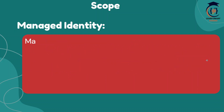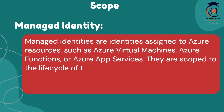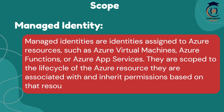Coming back to Managed Identity in terms of scope: Managed Identities are identities assigned to Azure resources such as virtual machines, function apps, or app services. They are scoped to the lifecycle of the Azure resource they are associated with, and they inherit permissions based on the resource configuration. That's the main difference — Managed Identity lives and goes away within that resource itself. If the resource has a particular limit, they also have that limit, because they are tied to that resource.